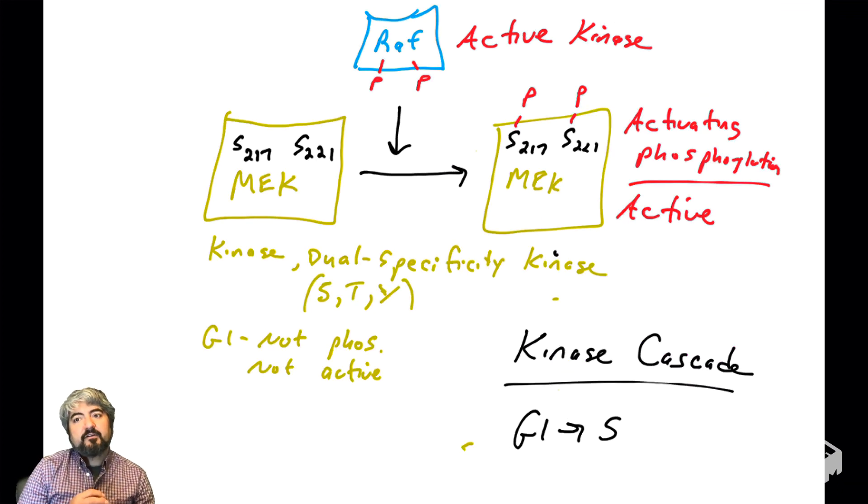In our previous video, we covered RAF kinase, which can phosphorylate MEK, which is a kinase. And MEK, we will see shortly, will phosphorylate ERK kinase, which will activate it. So let's now talk about ERK.